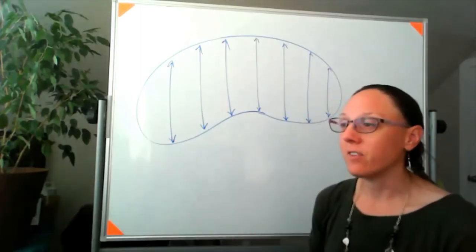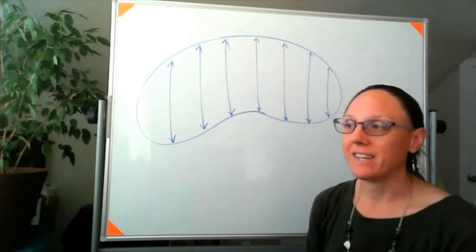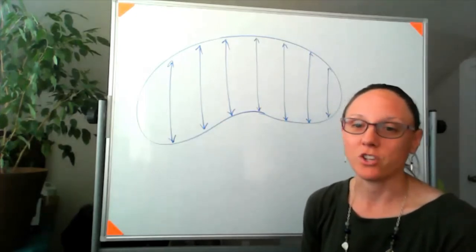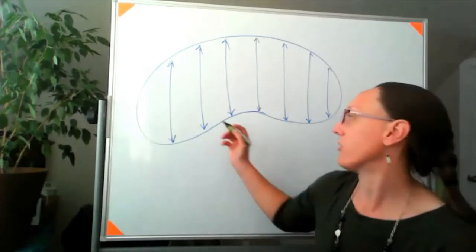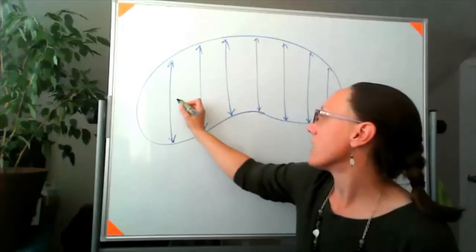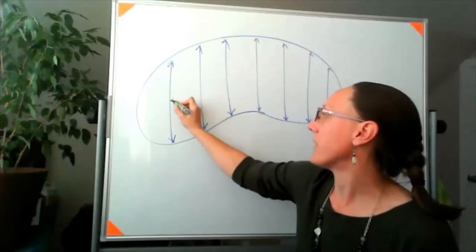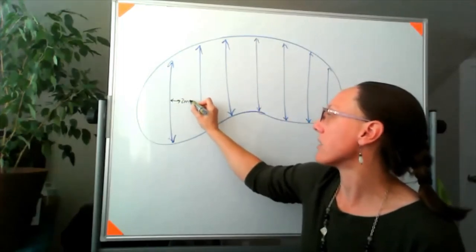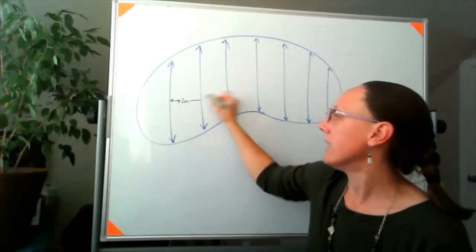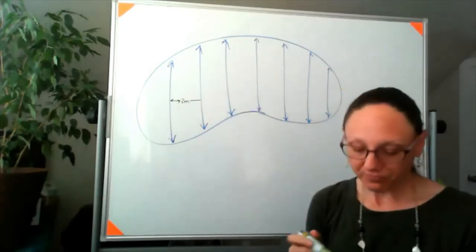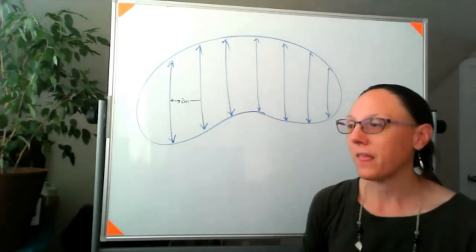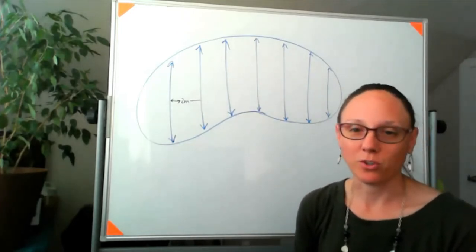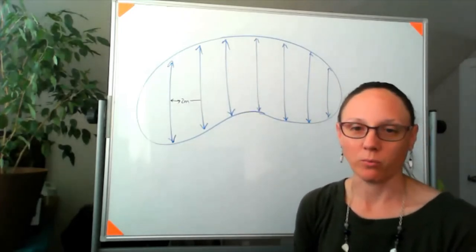The first thing we need to note is that you've been told that these were measured at 2-meter intervals, so that means the width of each of these strips is 2 meters.